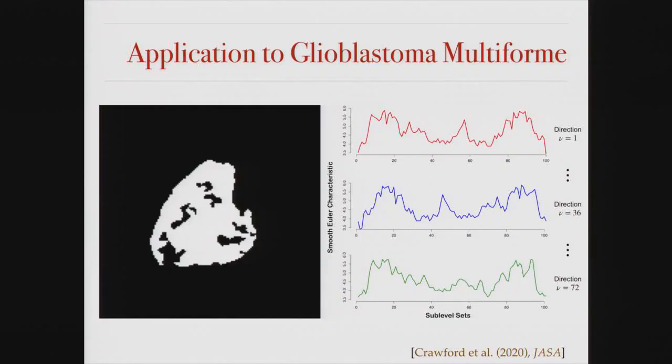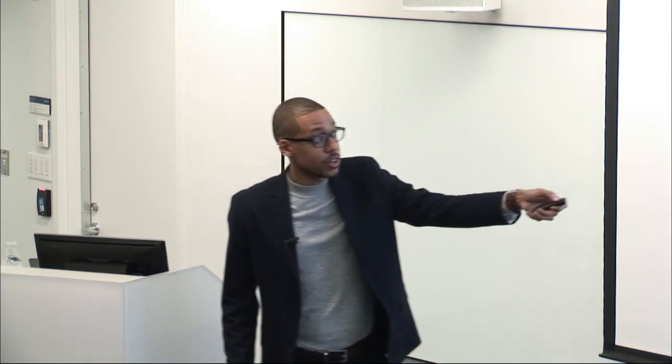We crop out this tumor, then with this tumor we take these slices and figure out a way to create a mesh-like form. After we have this, we do these sweeps and get these nice curves for each rotation of this tumor over different directions. Once we concatenate all these curves, this is our data vector for this given patient. We do this for all patients.